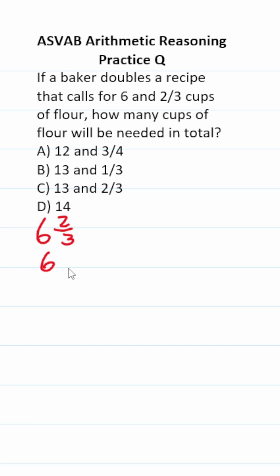I'm going to split this apart to be six times two and two-thirds times two. Six times two is twelve, of course. Two-thirds times two, again,